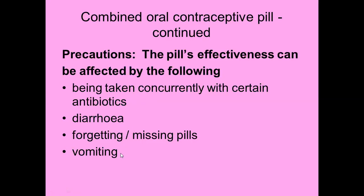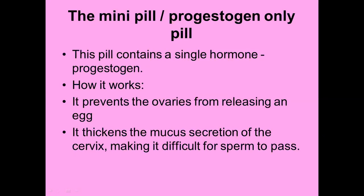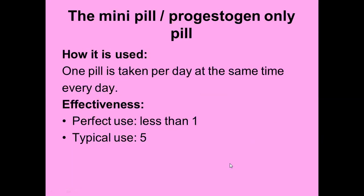If a female has diarrhea, vomits, or forgets and misses a pill, it is a problem. The more modern pill with less side effects is the mini pill — the progesterone-only pill. It contains only progesterone, not estrogen as well. It prevents the ovaries from releasing an egg and also thickens the mucus secretion of the cervix, making it difficult for sperm to pass through. It must be taken at the same time every day.